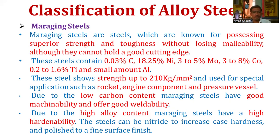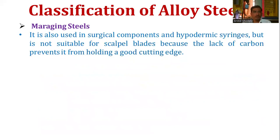Due to their low carbon content, maraging steels have good machinability and weldability. Due to their high alloy content, they have high hardenability and can be nitrided to increase case hardness and polished to a fine surface finish. They are used in surgical components and hypodermic syringes, but are not suitable for cutting blades because the lack of carbon prevents them from holding a good cutting edge.